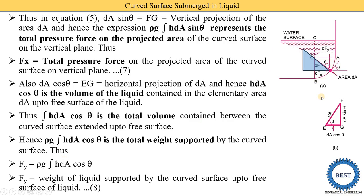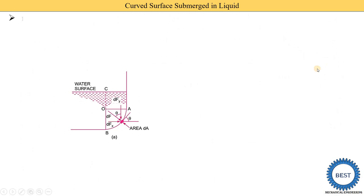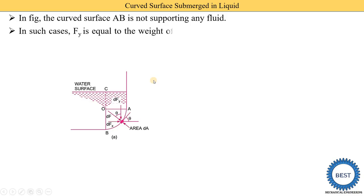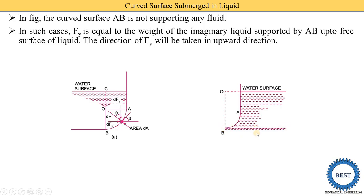Below the curved surface there is liquid, so Fy acts in the downward direction. However, if the curved surface is placed on a fixed base with no liquid below it, the curved surface AB is not supporting any fluid. In such cases, Fy equals the weight of the imaginary liquid supported by AB up to the free surface, but the direction of Fy is taken as upward — unlike the earlier case where it was downward.